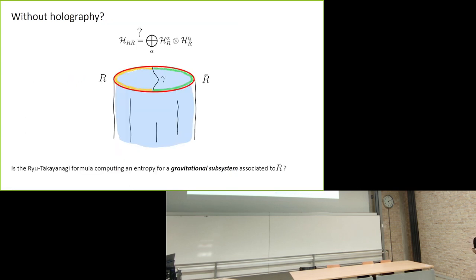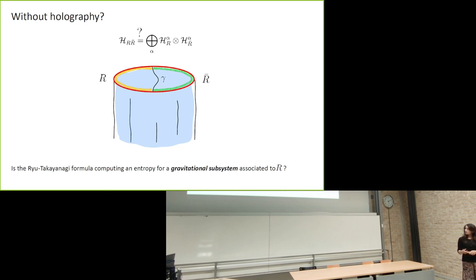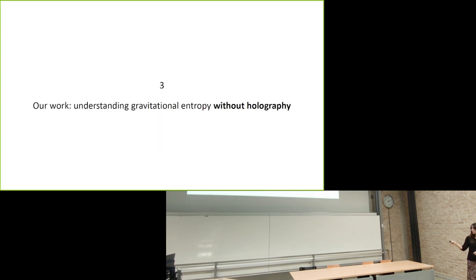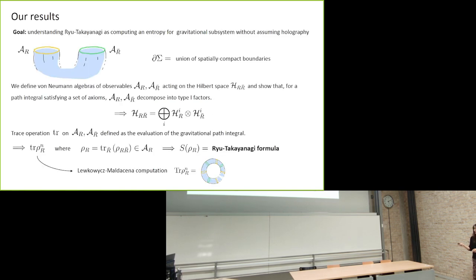All of this is in the case of holography. What happens if we don't know that a holographic dual theory exists? Can we still talk about the subsystem R, and is the Ryu-Takayanagi formula computing an entropy for this region? Our goal is to understand Ryu-Takayanagi without invoking holography.